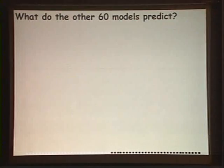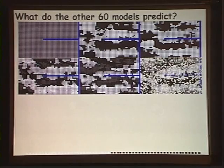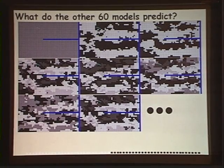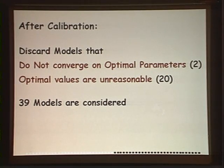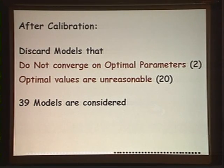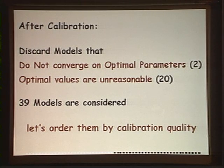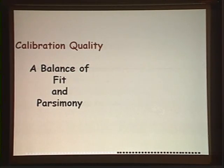What do those other 60 models predict? If we take each one, calibrate, and run in predictive mode, there are a couple things we notice. Two models won't converge in parameter estimation, and 20 yield unreasonable parameter values—coarse-grain materials had lower hydraulic connectivity than fine-grain materials. If we had only one model in that category, we'd have to keep working with it. But we have 39 models that all converged and gave reasonable values, so we'll consider those.